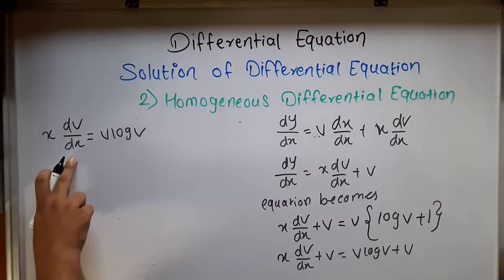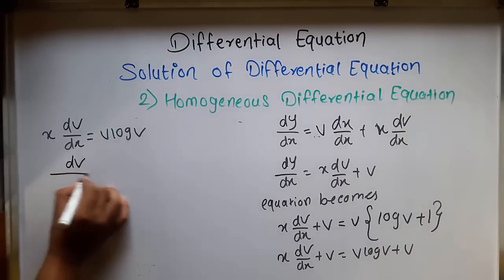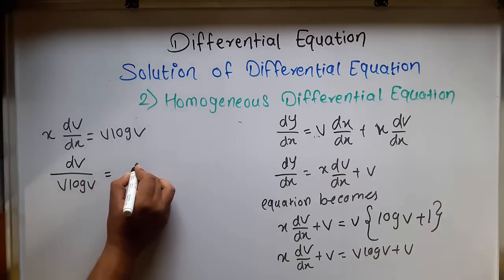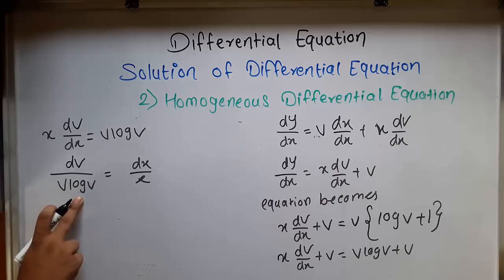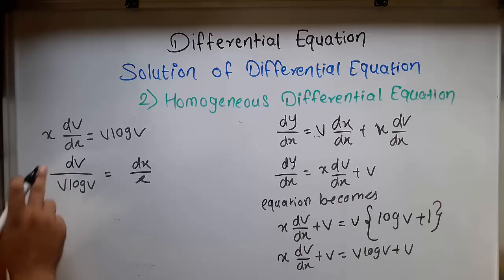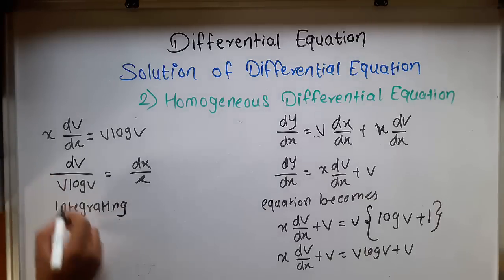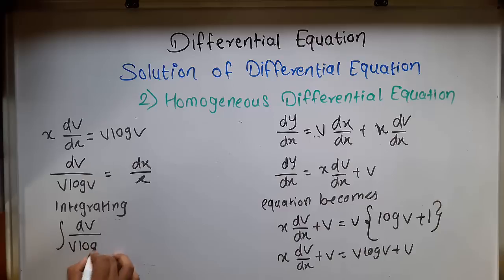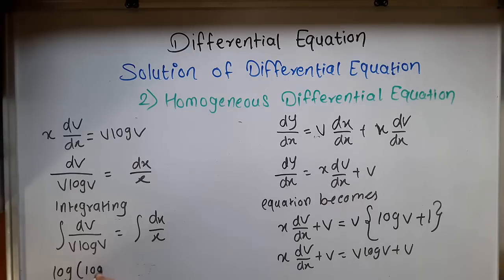Now we transfer the v term to the dv side and x and dx to the right-hand side. This gives dv divided by (v log v) equal to dx divided by x. Here, if we differentiate the denominator term (log v), it gives 1/v, meaning the numerator is already the derivative of the denominator. So integrating both sides: integral of dv/(v log v) equal to integral of dx/x. Integrating, we get log(log v) equal to log x plus c.